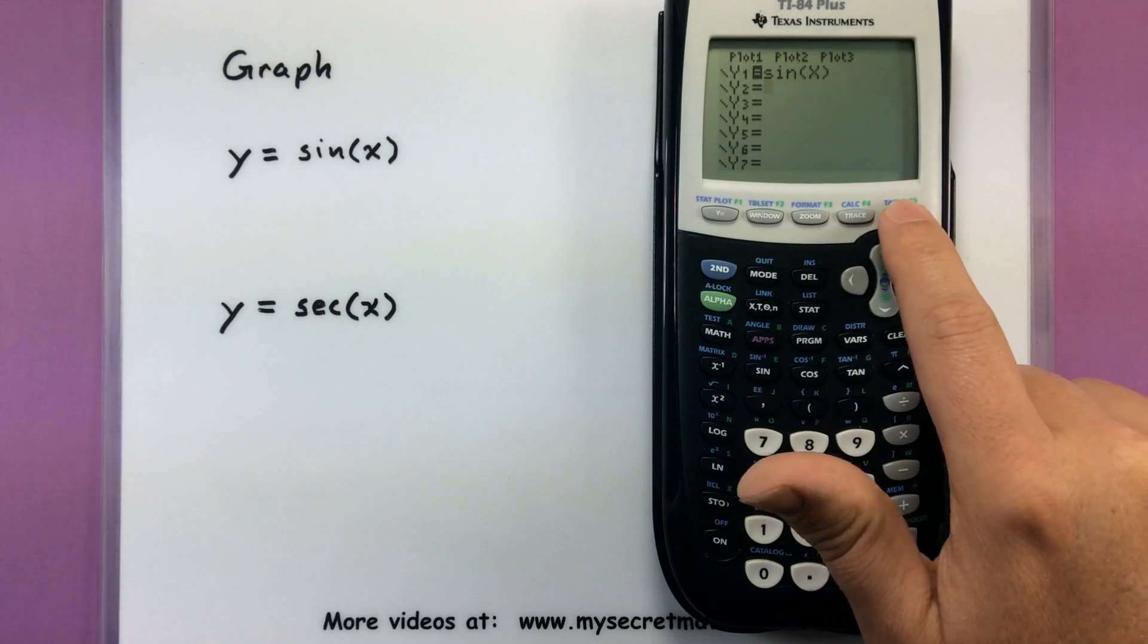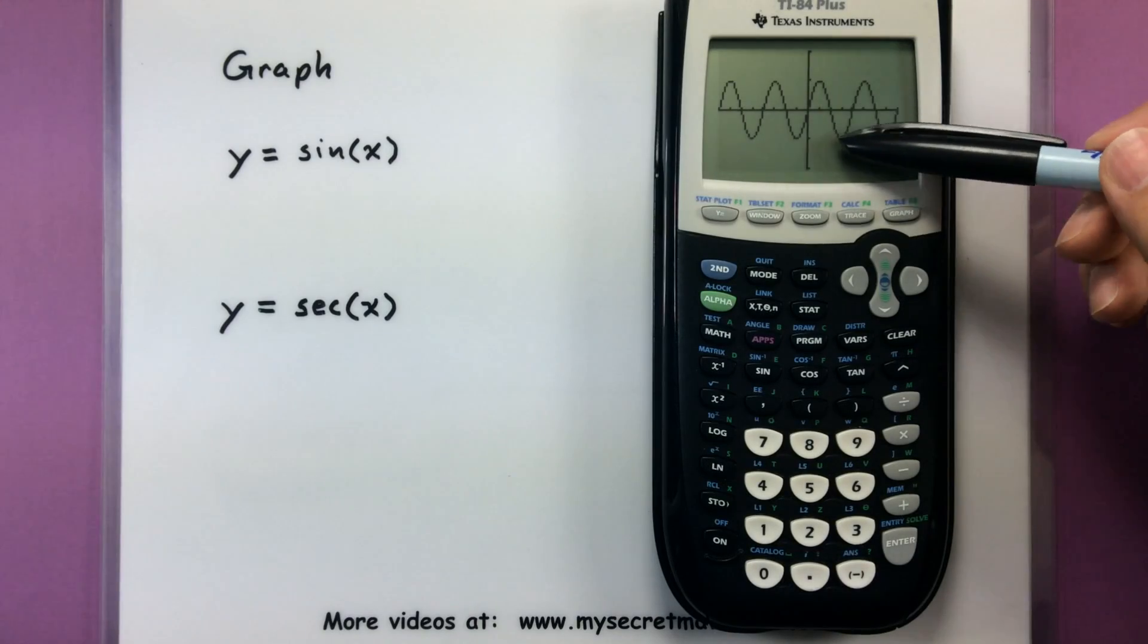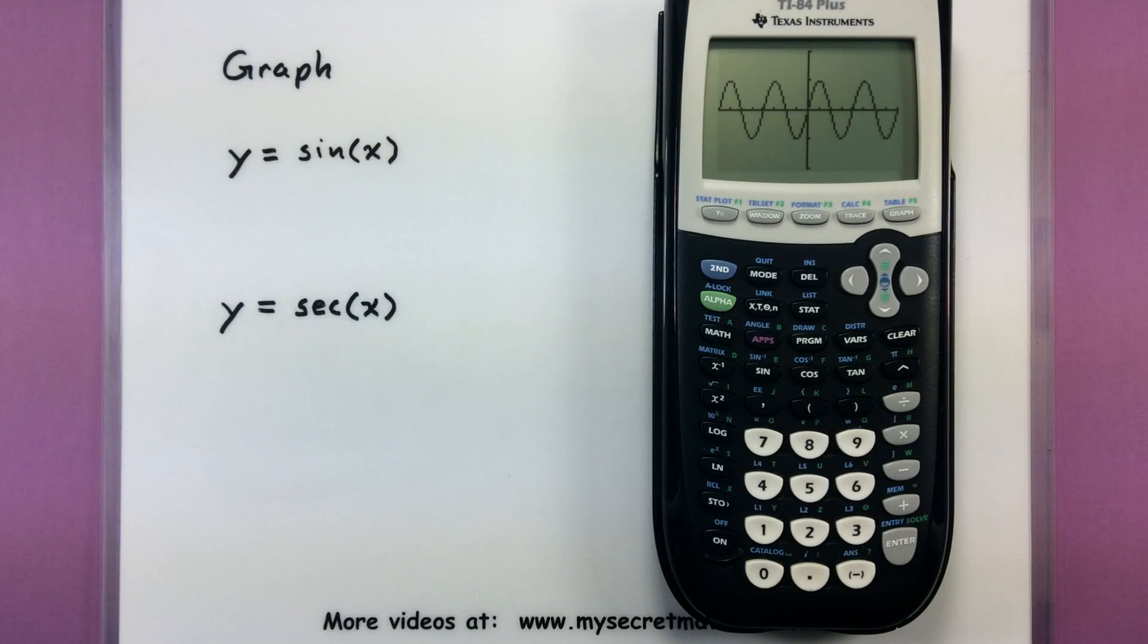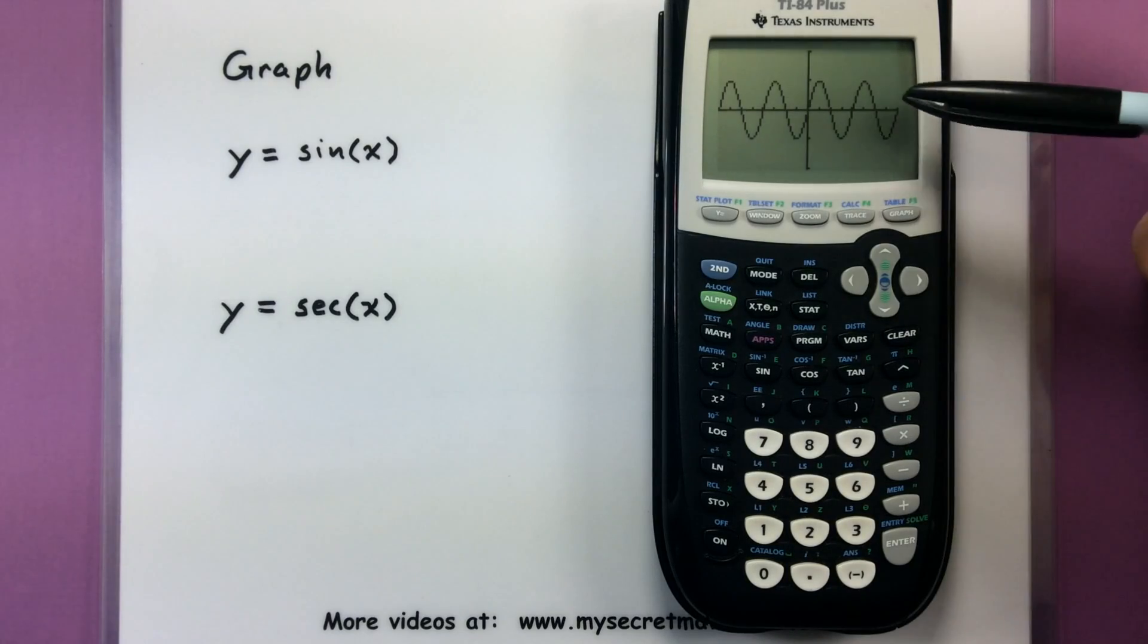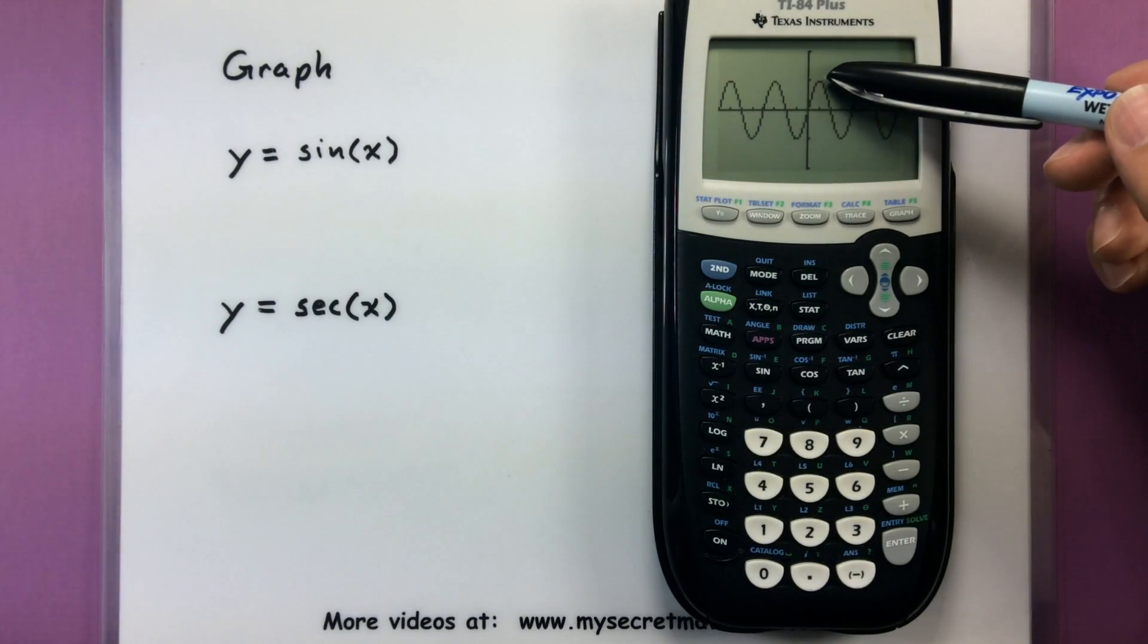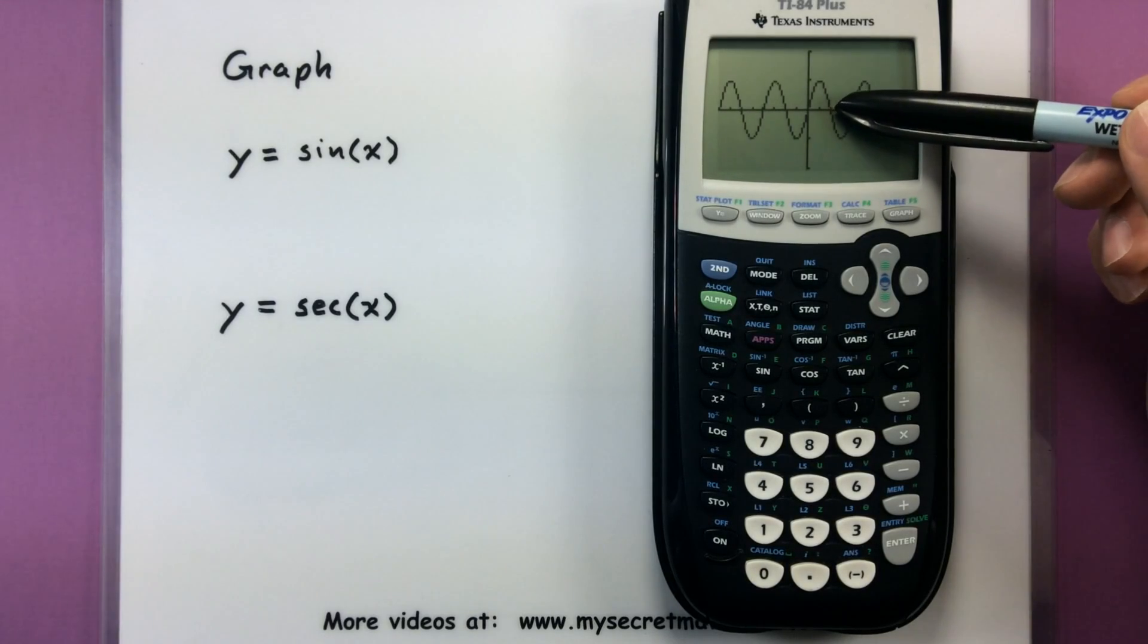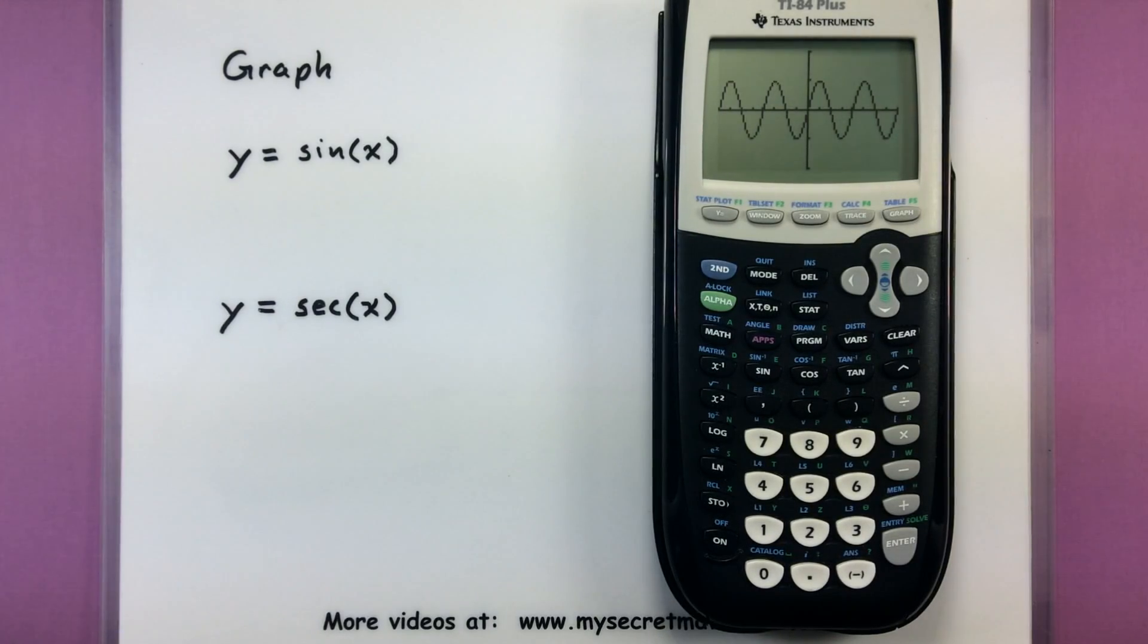So now that everything's set up and good to go, let's go into our y equals by pressing our y equals button and type in sine of x. And press graph. And sure enough, now we get a very good picture of what this sine graph looks like. We have our window big enough so we can actually see a few different periods of sine. The way we have our tick mark set up, we can see that it has a maximum at 1, minimum at negative 1, and it hits the x-axis here at 2π over 2 or what we would just call π.